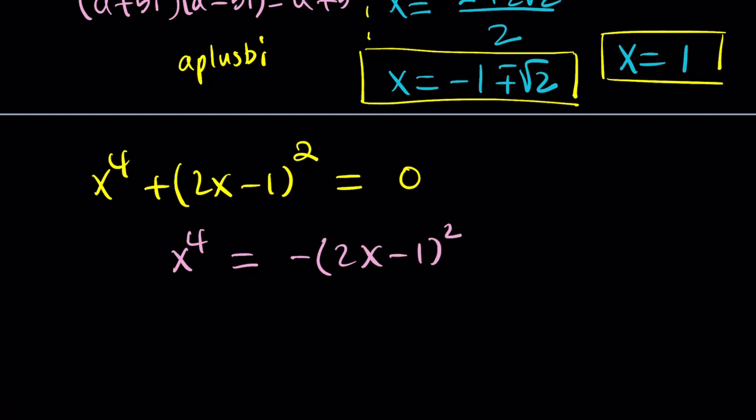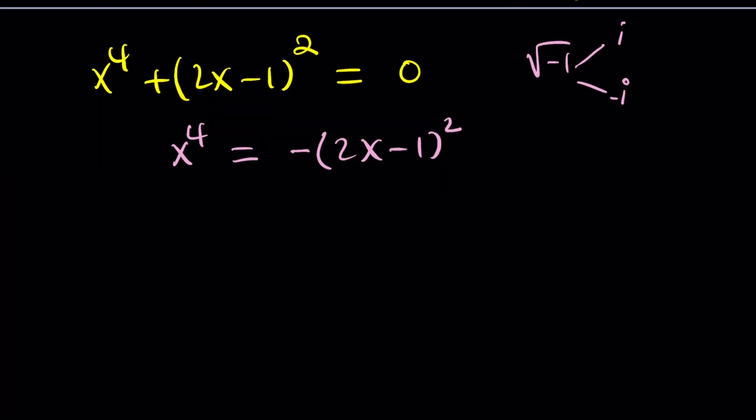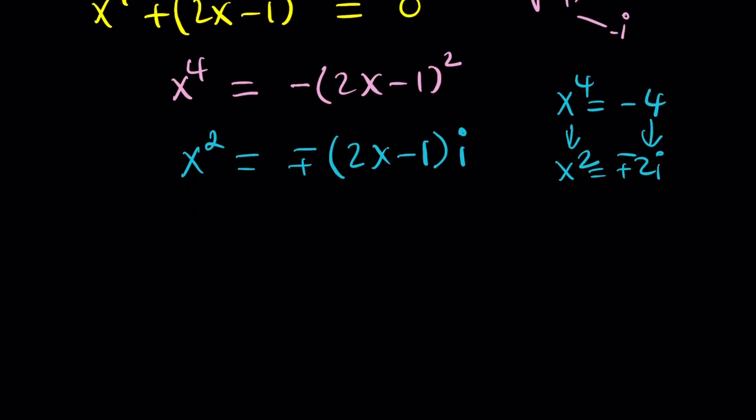So x to the 4th plus 2x minus 1 squared can actually be factored as follows, or just solved as follows. I'm going to put the 2x minus 1 squared with a minus sign on the right-hand side, and then I'll square root both sides. When I square root a negative 1, it's going to give me i. Because the square root of negative 1 is i. But negative 1 has two square roots. It could be i or negative i. So we can put a plus minus sign. When we square root both sides, we get x squared equals plus minus 2x minus 1 multiplied by i.